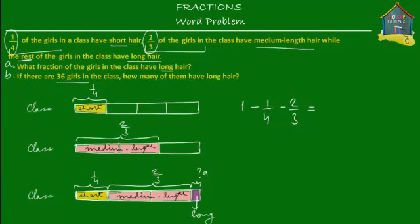How do we subtract one fourth and two thirds from one? Since these fractions have different denominators, we cannot subtract them directly. We must first find a common denominator for all three fractions. Since one equals one upon one, we need the common multiple of the denominators one, four, and three.